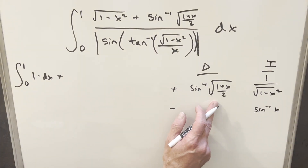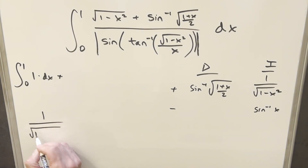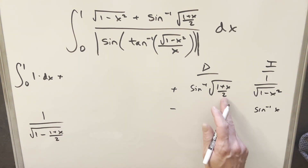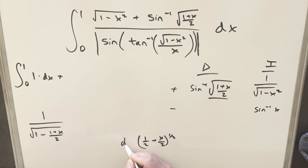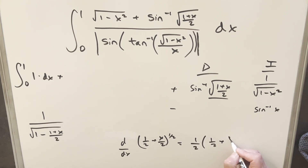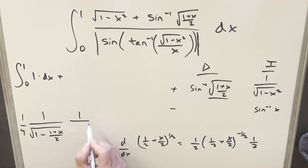Let's take the derivative of arcsin(√((1 + x)/2)). The derivative of arcsin is 1/√(1 - (argument)²), so that becomes 1/√(1 - (1 + x)/2). Then we need the chain rule on the inside. Rewriting as (1/2 + x/2)^(1/2), by the power rule we get (1/2)(1/2 + x/2)^(-1/2), and the chain rule gives another factor of 1/2. So we have 1/4 out front, times 1/√(1/2 + x/2).